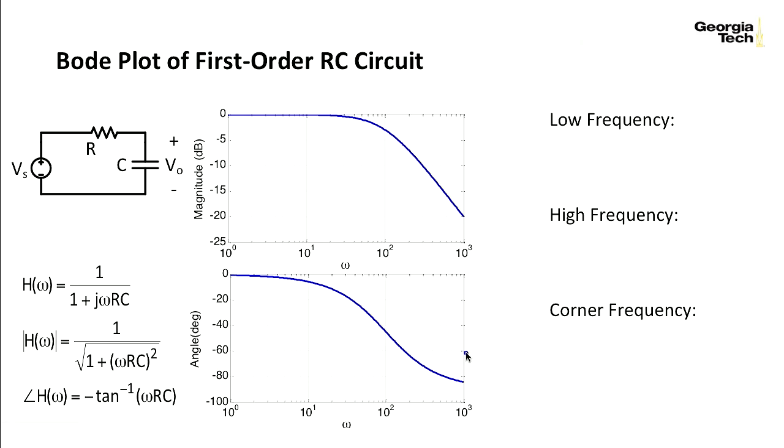There's some characteristic things that we want to look at on RC circuits like this. One is what happens at low frequency, what happens at high frequency, and what do we determine as being the corner frequency of this. So I'll look at the plot in a little bit more detail. At low frequency, we've got zero decibels. At high frequency, I've got what looks like a slope here.